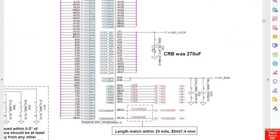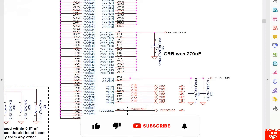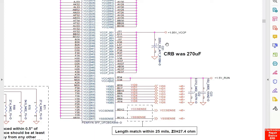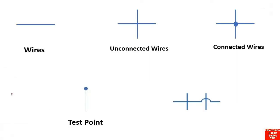Here we have an electrolytic capacitor, also called a polarized capacitor. There is a difference between a polarized capacitor — which has a plus and minus — and a simple capacitor like a ceramic capacitor. For this capacitor, its reference is C21. It has plus and minus terminals.